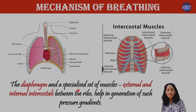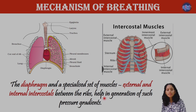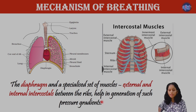The diaphragm and a specialized set of muscles known as external and internal intercostals, located between the ribs, help in the generation of the pressure gradient needed for breathing.